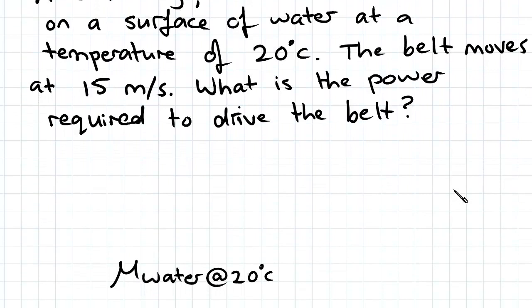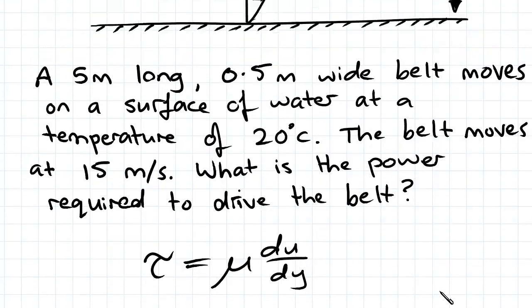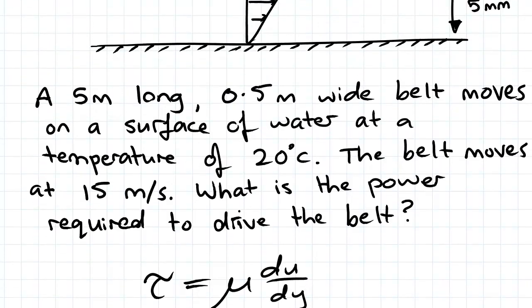So we're going to be using Newton's law of viscosity equation and so we're going to need to find mu, which is the dynamic or absolute viscosity. We are given that the temperature of the water is 20 degrees Celsius.